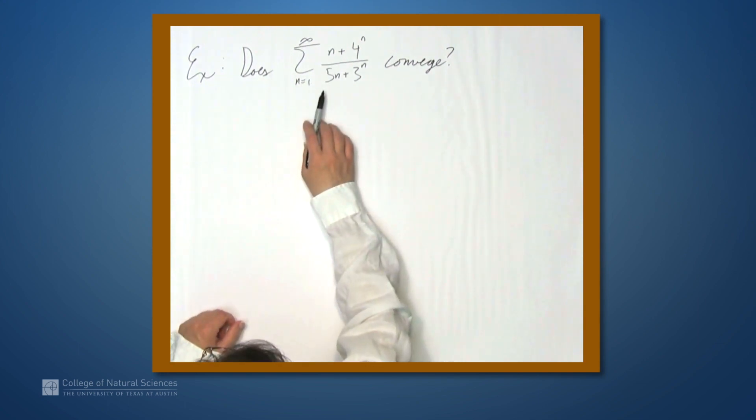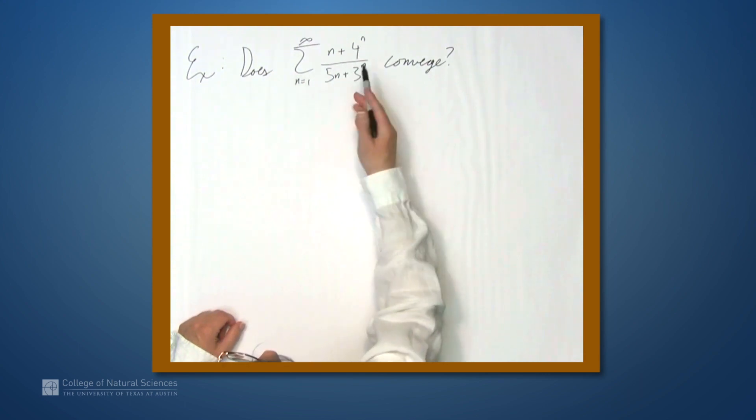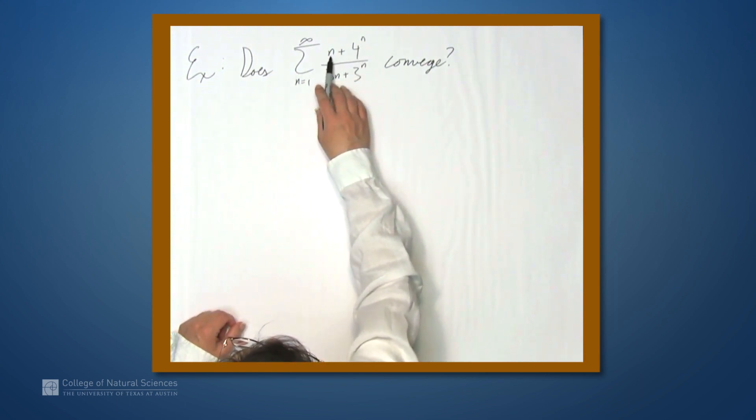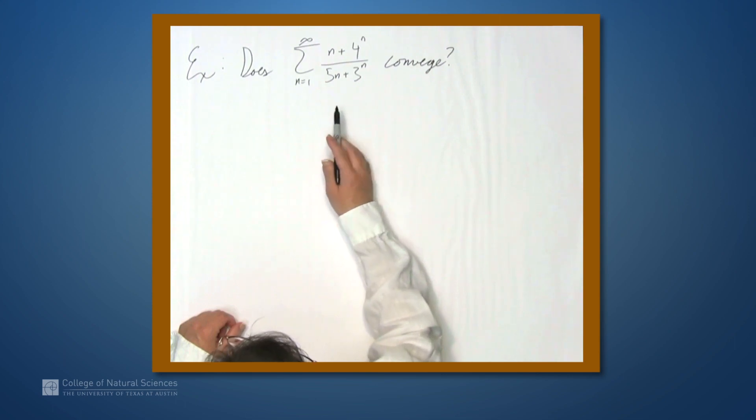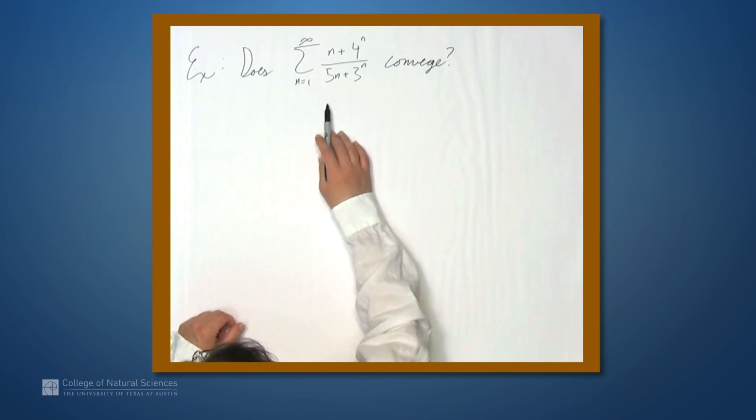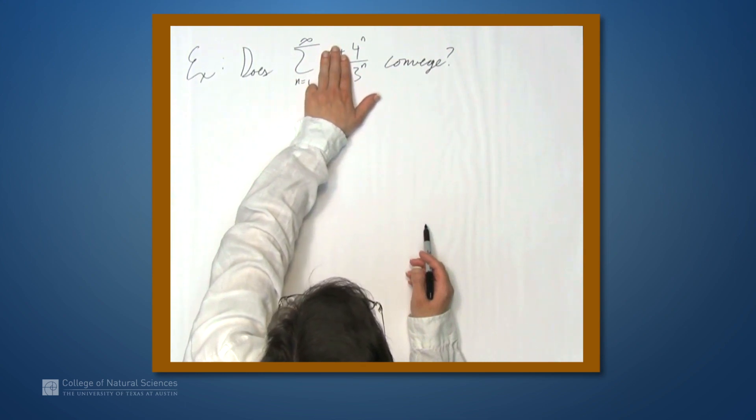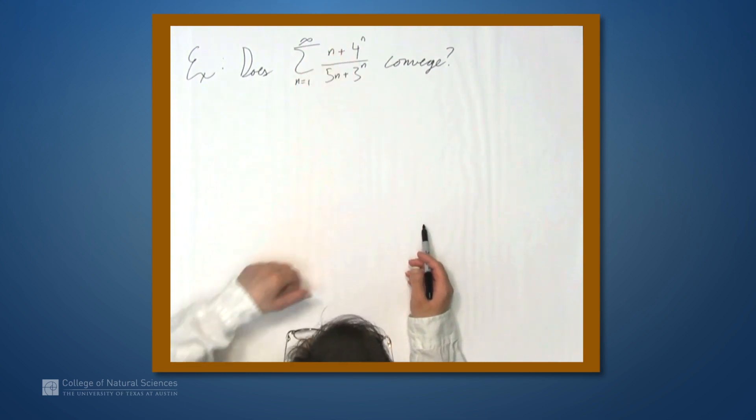So what can we simplify this to? Well, the top is somehow dominated by 4 to the n. This n term doesn't really matter in the long run. Likewise, in the denominator, the 5n doesn't really matter. It's the 3 to the n that matters in the long run for really large values of n. So we can compare this to the series from n equals 1 to infinity of just 4 to the n over 3 to the n.